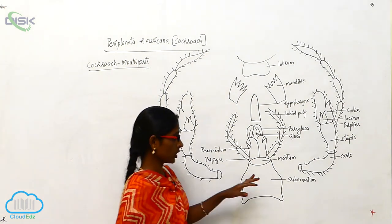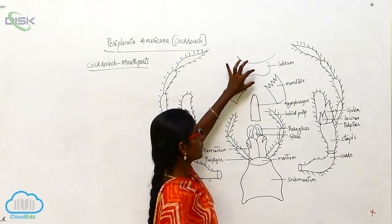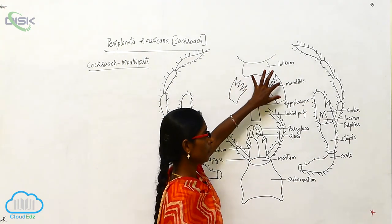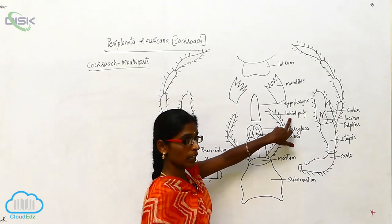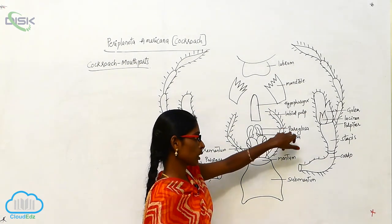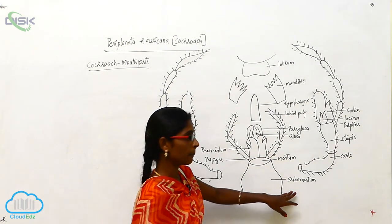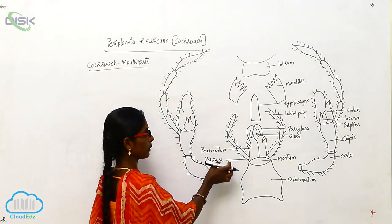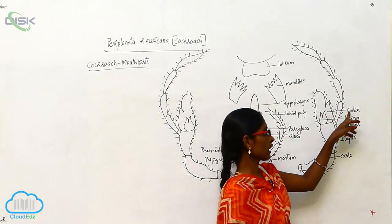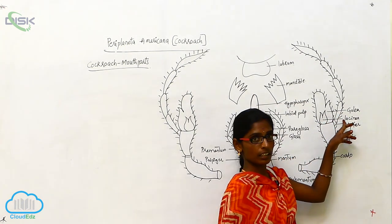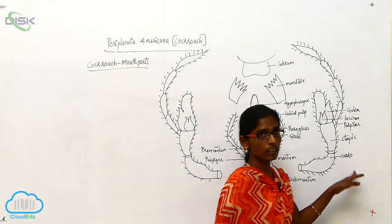Here the cockroach mouth parts include the labrum, mandible, hypopharynx, labial pulp, paraglosa and glosa, mentum, submentum, prementum and palfifer, galea, lacinia, palfifer, stipes and cardo.